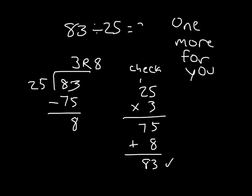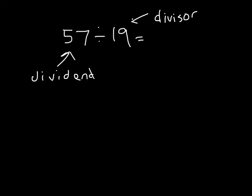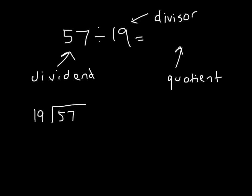So 83 divided by 25 equals 3 with a remainder of 8. One last problem to review: 57 divided by 19. 19 is our divisor, and our dividend is 57 — that's our whole, that's what we're dividing. We'll set it up using the standard algorithm. 19 is close to 20; counting by 20: 20, 40, 60 — so 20 times 3 is 60. Let's try 3. 3 times 9 is 27, regroup 2. 3 times 1 is 3, plus 2 is 5 — that's 57. 57 minus 57 is 0.